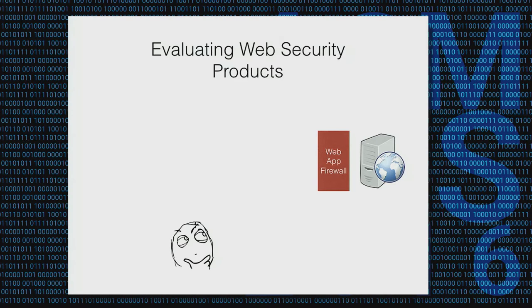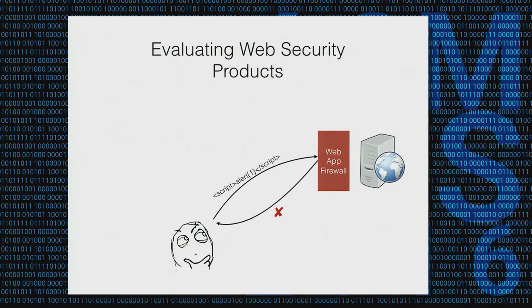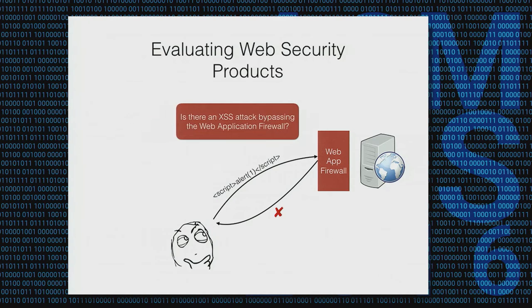The problem we are going to look at in this talk is basically evaluating web security products like web application firewalls. What a web application firewall does in a nutshell is: you send a normal input to the application, it is supposed to forward the application's output to you. However, if you send a malicious input like a JavaScript string, it's supposedly going to detect that and reject the request.